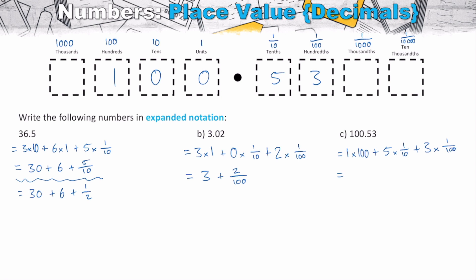So when we expand this out, 1 times 100 will be just 100. Five of our tenths will be 5/10. And then three of our one hundredths will be 3/100. And that's how we get things into expanded notation.